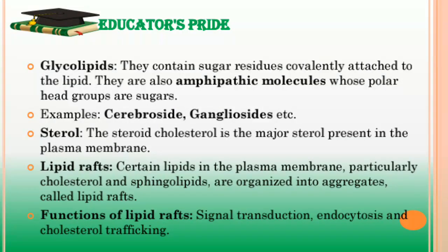In addition to phospholipids, plasma membranes also contain glycolipids and sterols. Glycolipids are mostly found in the outer leaflet of the plasma membrane with their carbohydrate portions exposed on the cell surface. They contain sugar residues covalently attached to the lipid and are also amphipathic molecules whose polar head groups are sugars. They can derive from either glycerolipids or sphingolipids — for example, cerebrosides as the simplest glycolipids and gangliosides as more complex glycolipids.